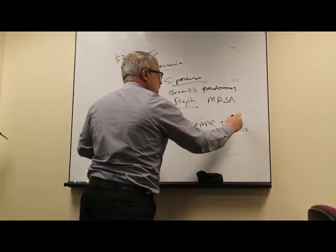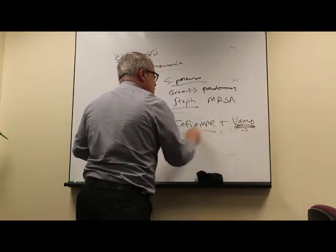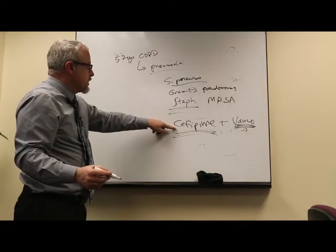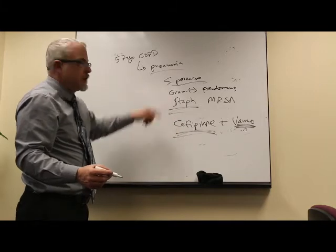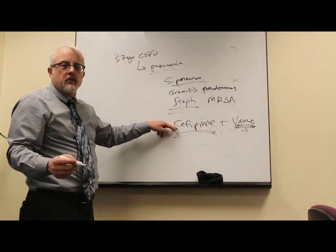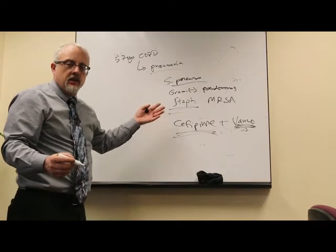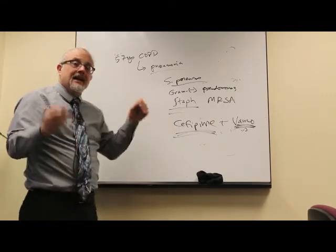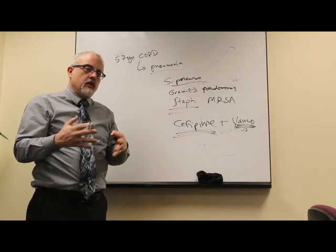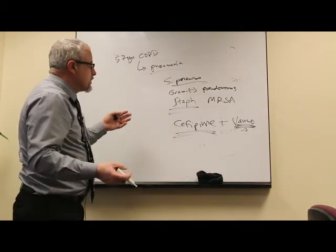We're going to cover this with cefepime and plus vanco. This is for the MRSA. This is for the Pseudomonas, the other nasty gram negatives. And cefepime still has adequate gram positive to cover strep pneumo. You would never use this for a community-acquired pneumonia, because it's not the best drug for strep pneumo. But I think in this case, it's a reasonable choice for empiric coverage. Remember, you always need to keep distinct in your mind empiric coverage versus specific, we know what we're treating coverage.